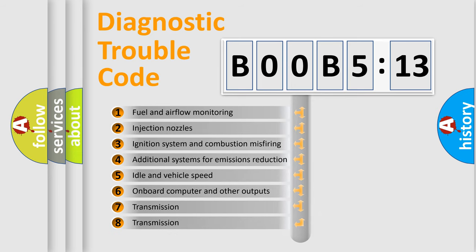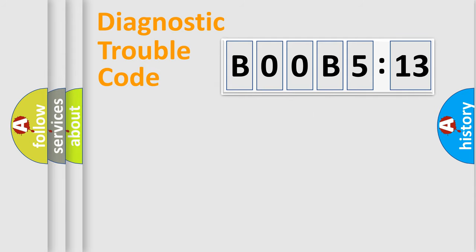The third character specifies a subset of errors. The distribution shown is valid only for the standardized DTC code. Only the last two characters define the specific fault of the group.